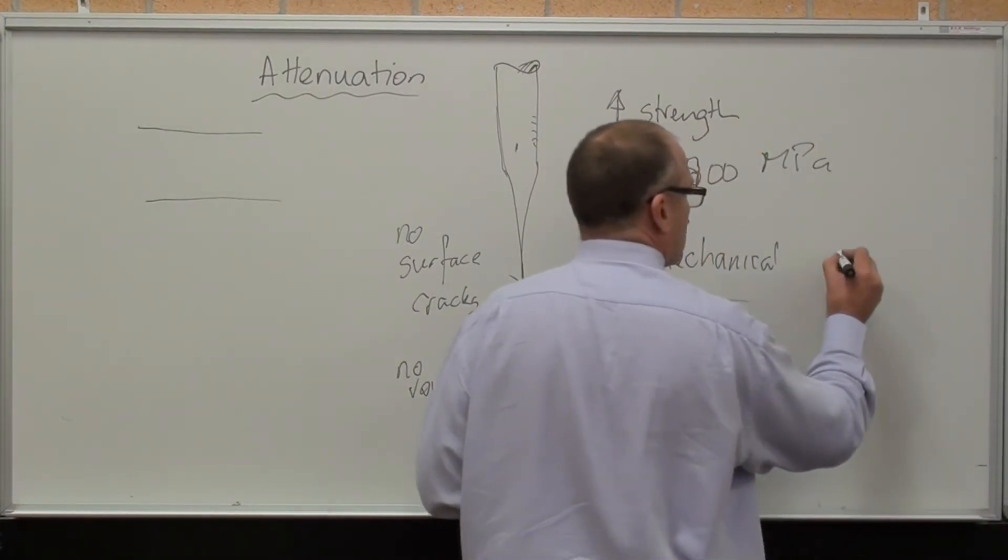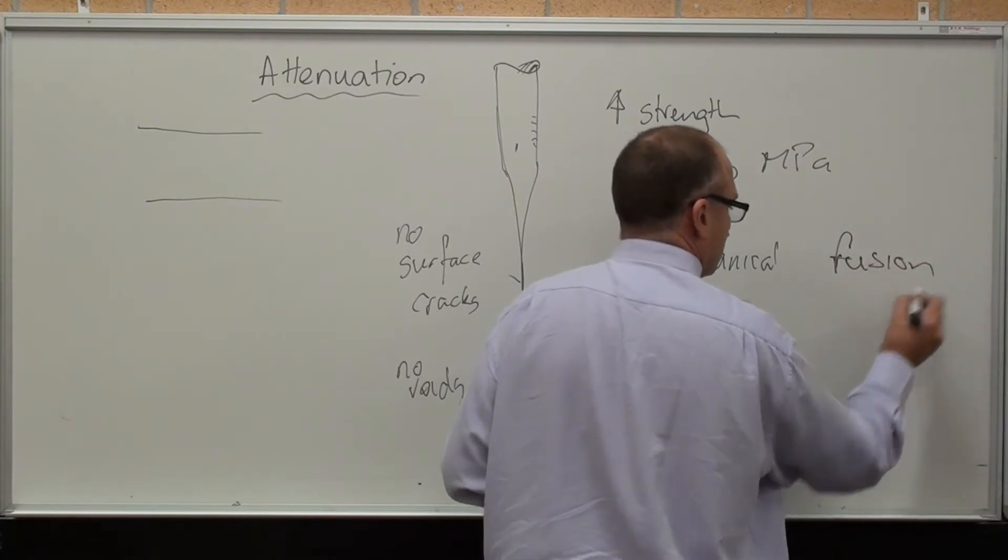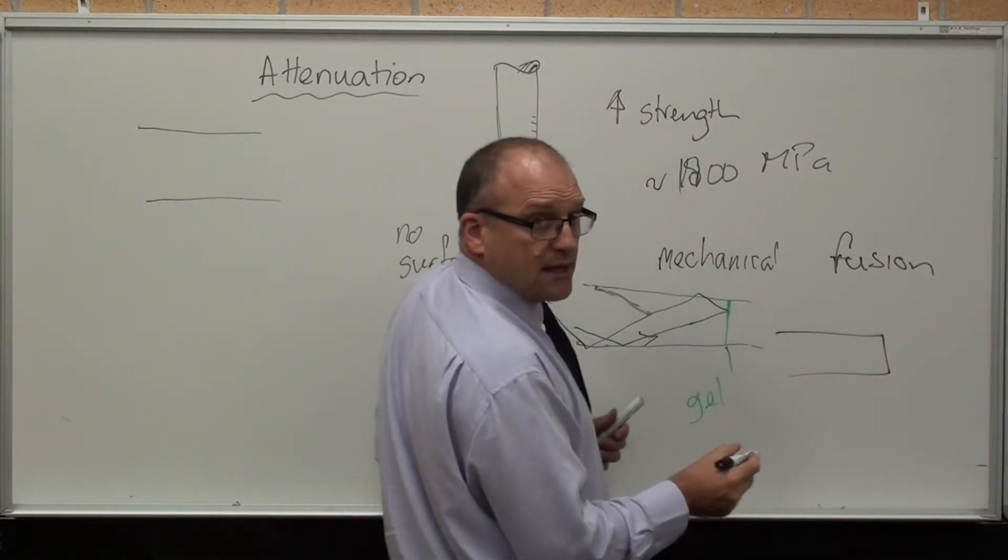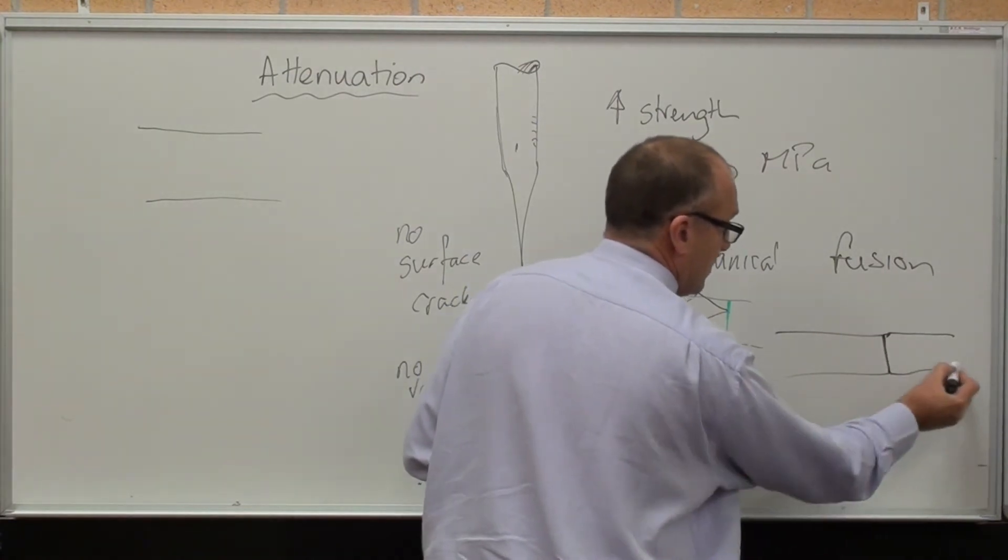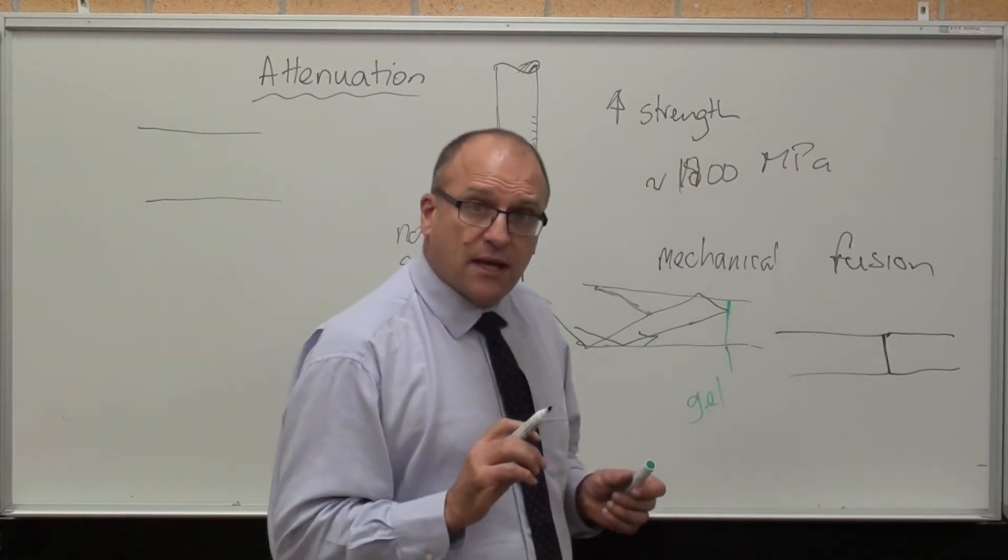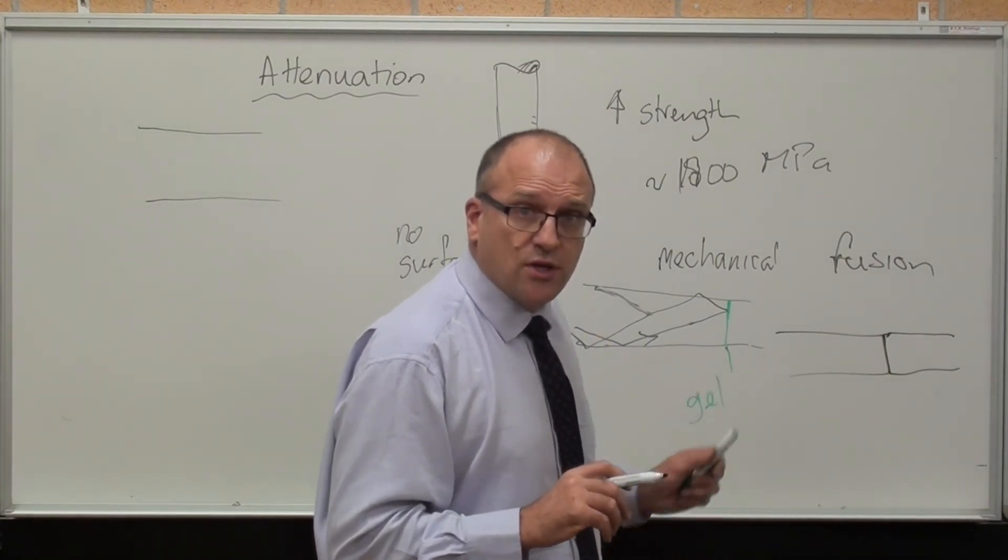The other way they join the cables is by fusion. Then physically, same thing, cut the ends nice and clean, polish nice and clean, put them together, and physically melt them together. That gives a better result than a mechanical joint usually.